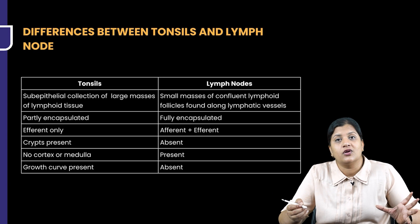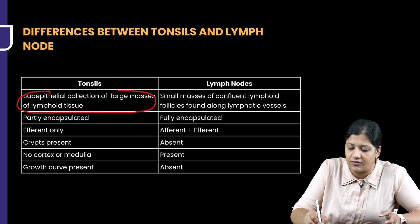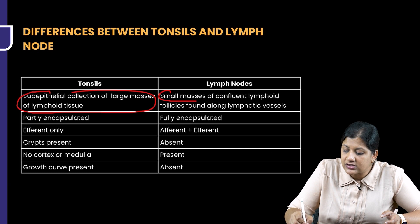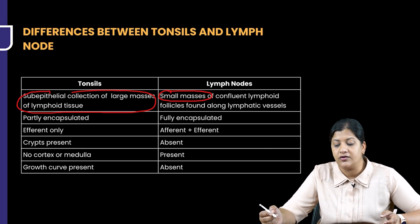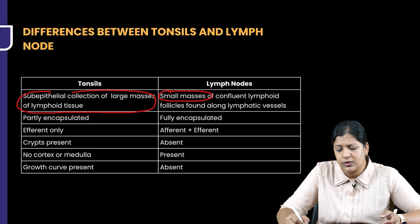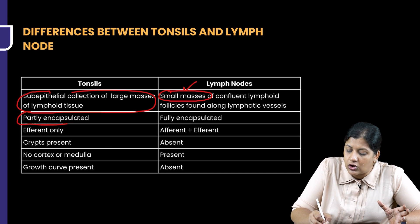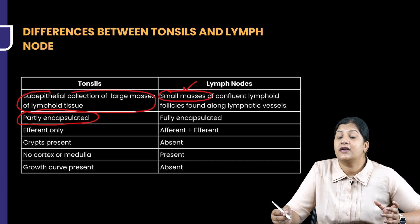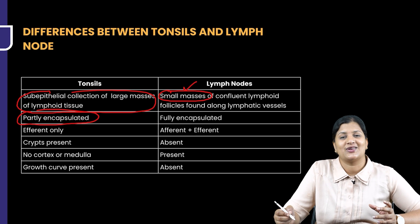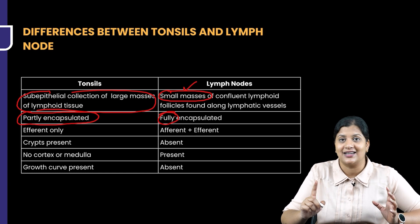A tonsil is nothing but some epithelial collection of large masses of lymphoid tissue. This is a large mass of lymphoid tissue, whereas lymph nodes are small masses of confluent lymphoid follicles seen along the lymphatic vessels. These are usually small, whereas a tonsil is a large mass of lymphatic tissue. Tonsil is not completely encapsulated but is partially encapsulated or hemi-encapsulated, but lymph nodes have a full capsule. The capsule is completely present in a lymph node and only partially present in a tonsil.